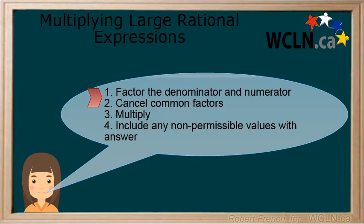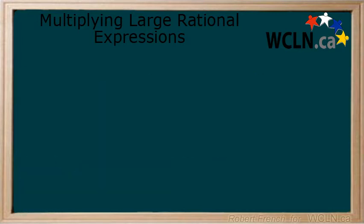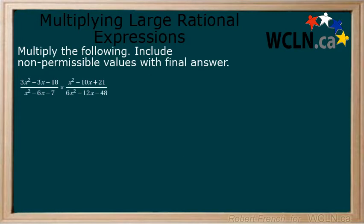Let's consider the following example. Multiply the following rational expressions and include non-permissible values with your final answer. Step 1.